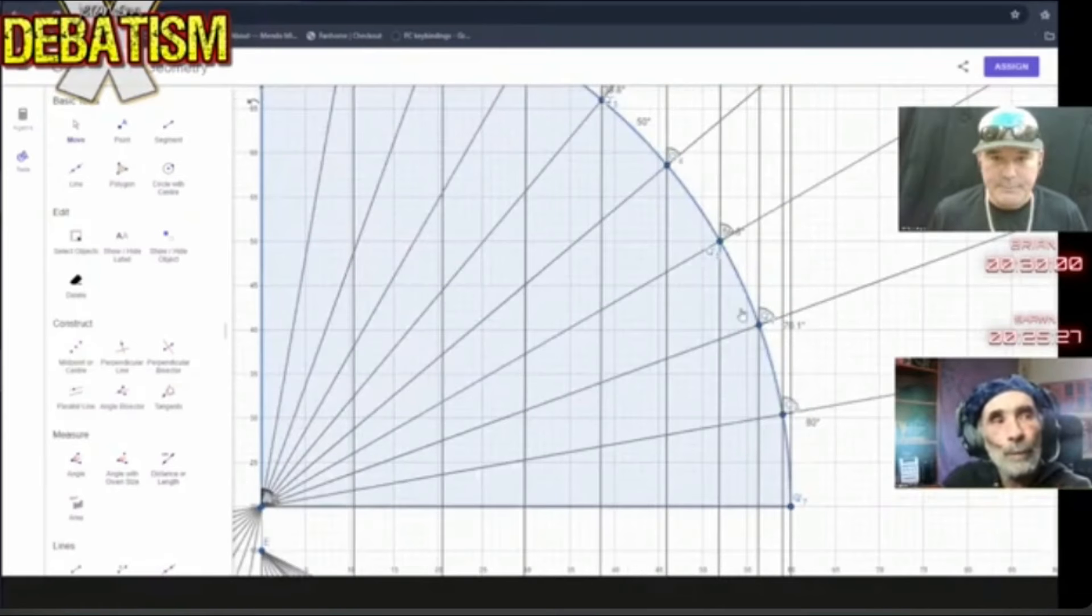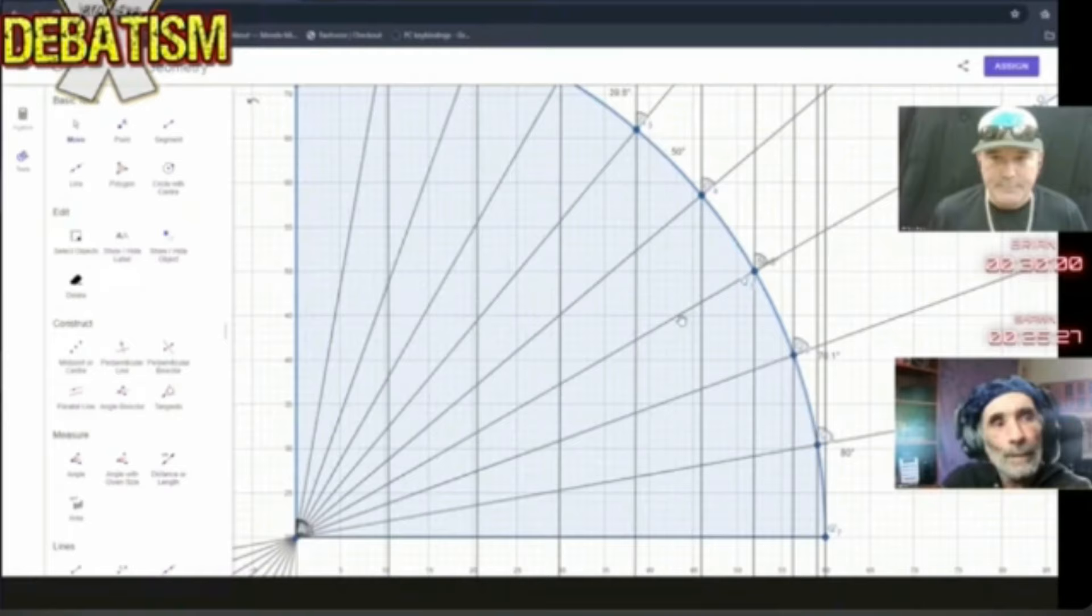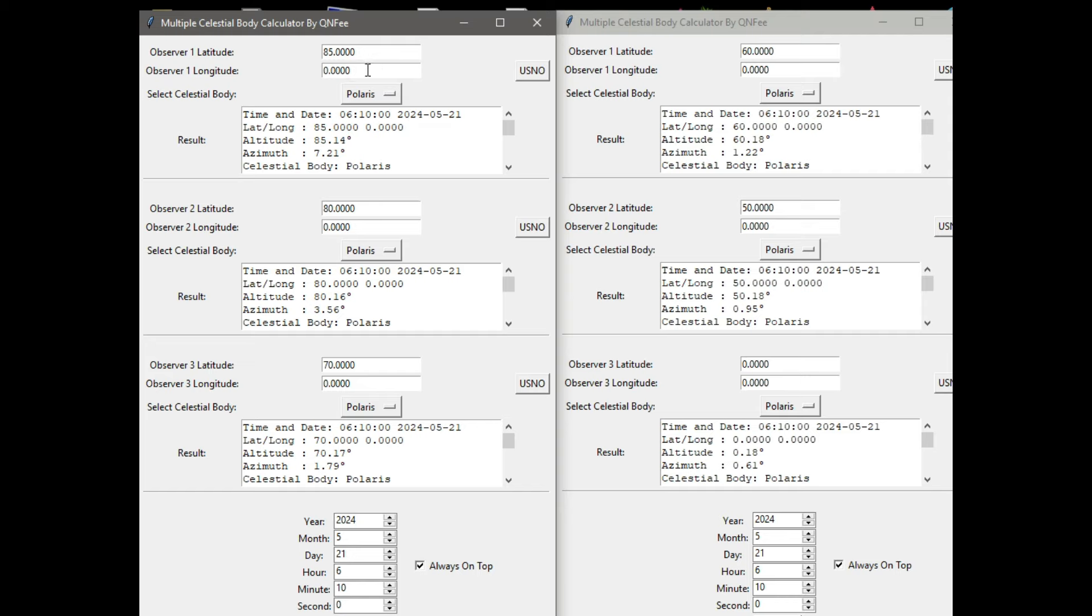Now the proper way to do it is like this. No, that's by no means a proper way to do it, Sean. You're not even using the data, the celestial data. These observer locations are all on the prime meridian observing Polaris.